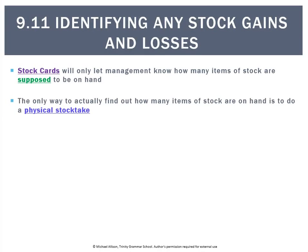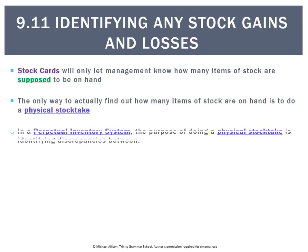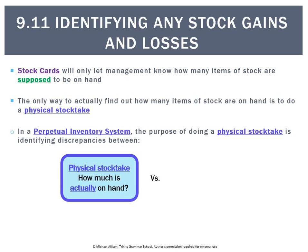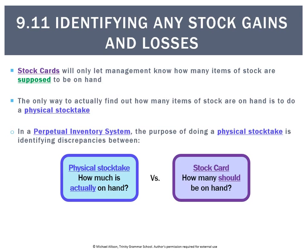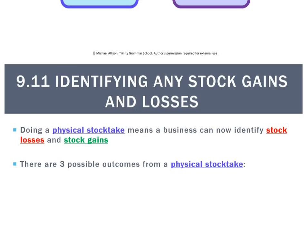The stock card is only going to tell us how many items should be on hand, or are supposed to be on hand. The only way to find out how many actually are there is to do a physical stock take. What we end up doing is identifying any discrepancies between the physical stock take — how much is actually there — versus the stock card — how many units should be on hand.